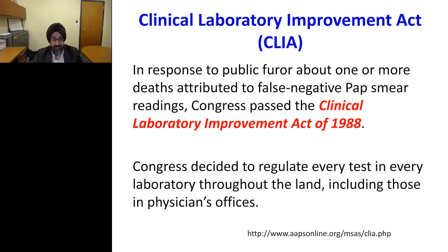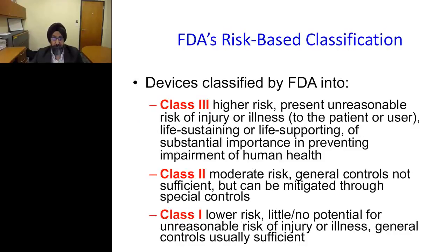The Clinical Lab Improvement Act was passed by Congress in 1988. The purpose was for Congress to regulate every test in every lab throughout the country, including physician's offices. FDA was also given responsibility to monitor the risk associated with various lab tests and the devices used to perform testing. FDA has classified these devices into three categories. Class III devices present unreasonable risk of injury, illness, or can be life-threatening. Class II devices have a moderate risk where general controls are not sufficient but can be mitigated through special controls. Class I devices, which have lower risk, can be waived by the FDA.